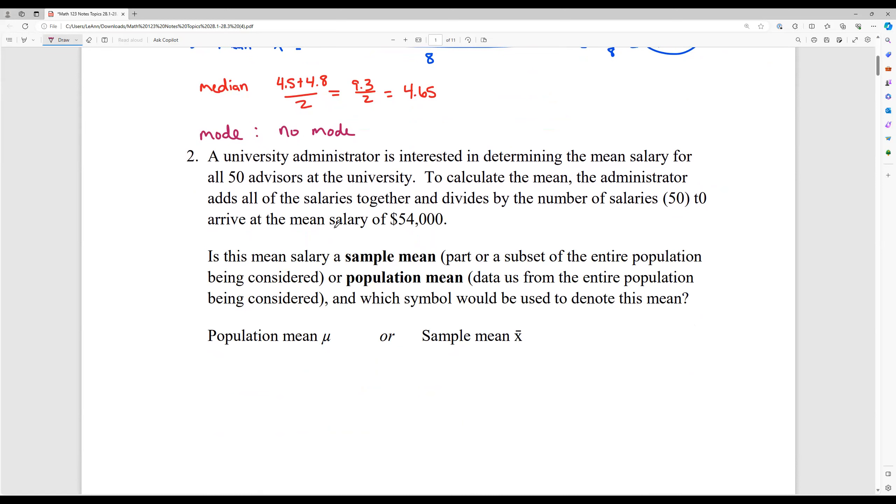So let's see if we can figure that out and see what the difference is. So a university administrator is interested in determining the mean salary for all 50 advisors at the university. So the entire advisor pool is 50 people to calculate the mean. The administrator adds all of the salaries together and divides by the number of salaries, which is 50 to arrive at the mean salary of $54,000. Now, is this mean salary a sample mean or is it a population mean, and which symbol would we use?